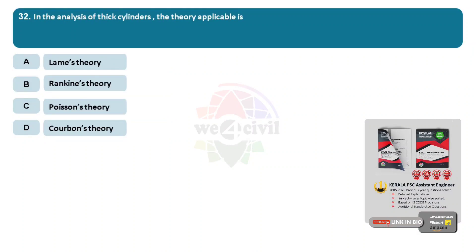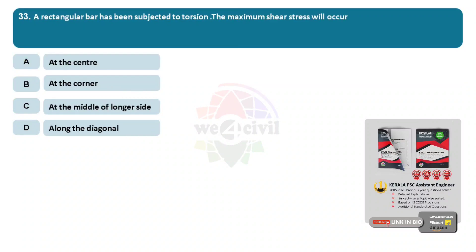Question 32: In the analysis of thick cylinders, the theory applicable is? Options: A, Lame's theory. Question 33: A rectangular bar has been subjected to torsion. The maximum shear stress will occur? Options: A, at the center. B, at the corner. C, at the middle of longer side. D, along the diagonal. Answer: Option C, at the middle of longer side.